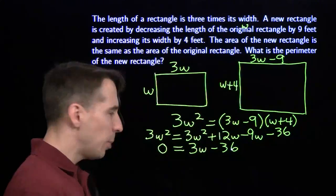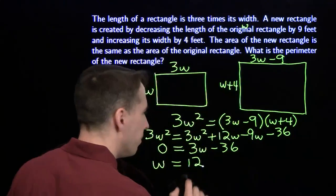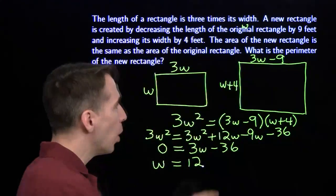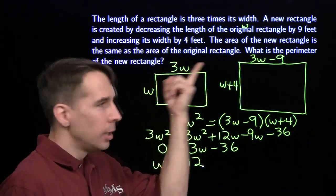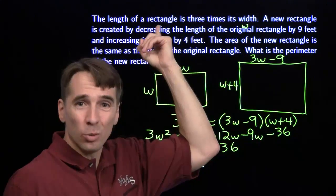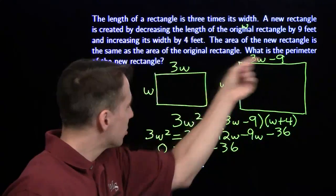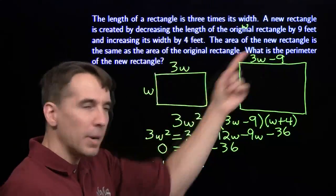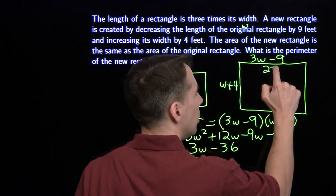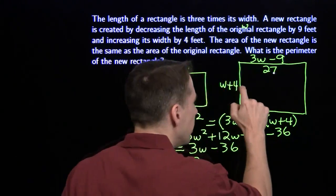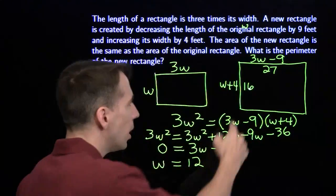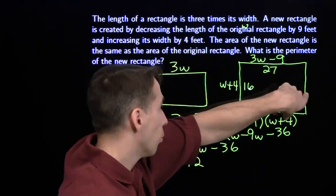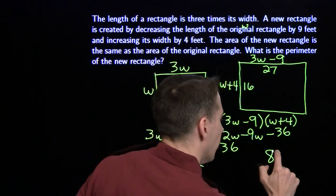12w minus 9w gives us 3w minus 36. Add 36 to both sides, divide by 3, and we see that w is 12. It's very tempting to write down 12 as the answer and move on, but the question asks for the perimeter of the new rectangle — and that's not w. So we go back to our picture. Width of the new rectangle is 12 plus 4 equals 16, and the length is 3 times 12 minus 9 equals 27. The perimeter is 2 times (27 plus 16), which gives us a perimeter of 86 feet. I saved myself by making sure I answered the question.